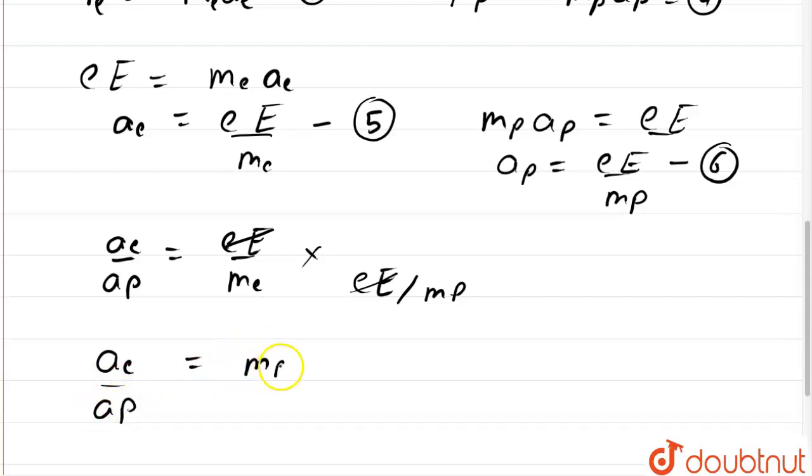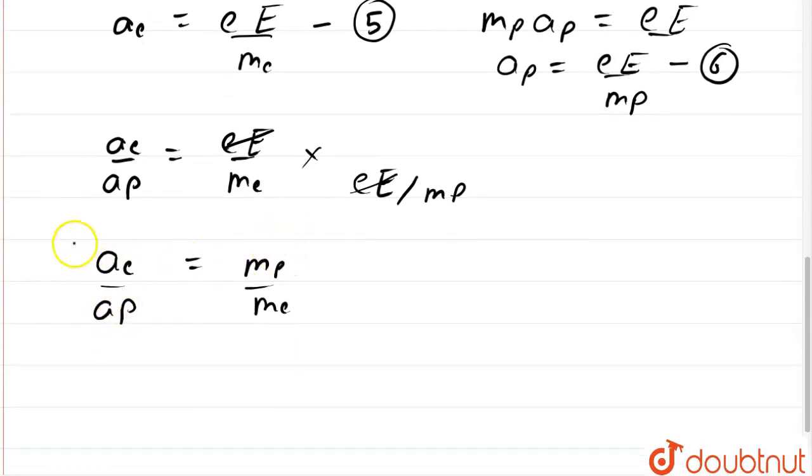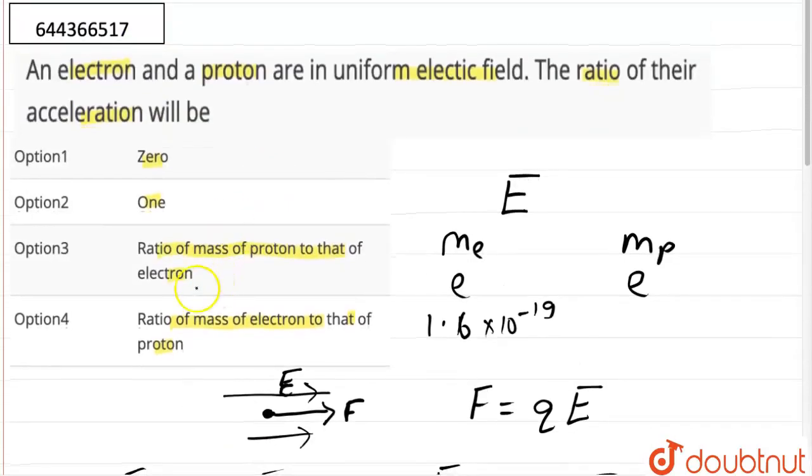So our required ratio is mass of proton divided by mass of electron. Okay, so the correct answer would be mass of proton to that of electron. Option number three is the correct answer.